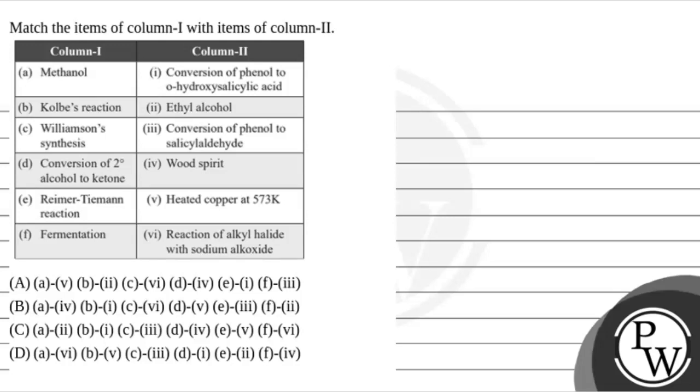Hello, let's read the question. The question says match the items of column 1 with the items of column 2. So in column 1, different reactions and alcohols are given and we have to match it with column 2.